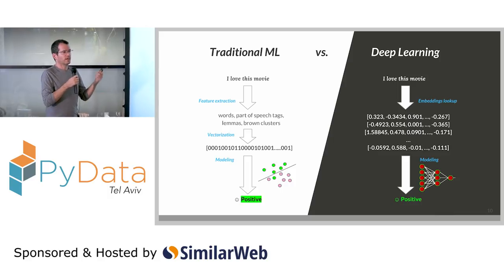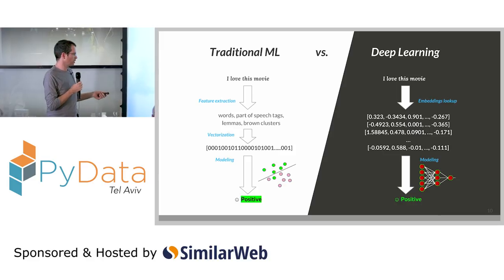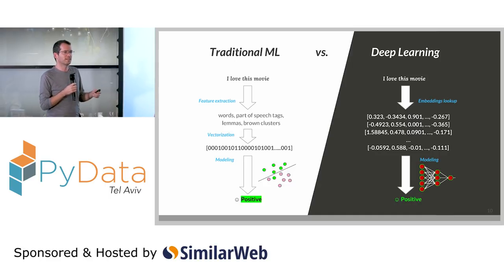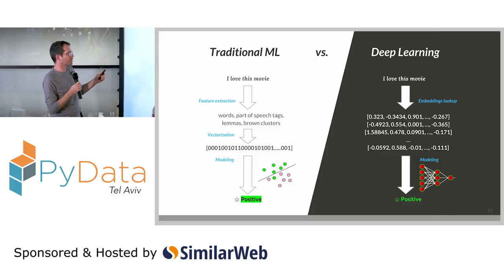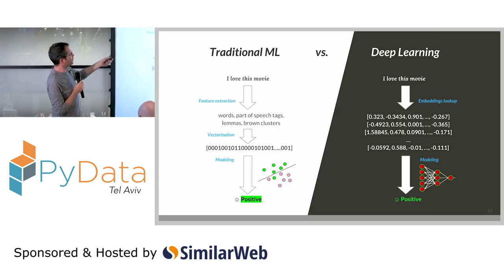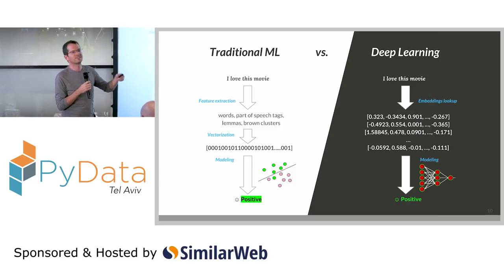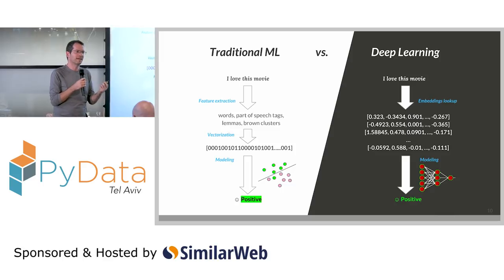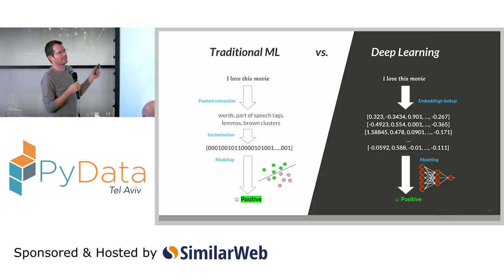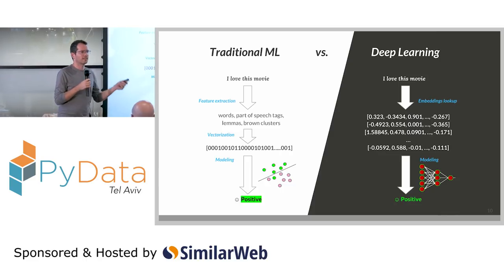Let's briefly discuss the difference between traditional machine learning — what we've been doing at Basis for many years — and deep learning, which we started doing recently. This is specifically for NLP. The example shown is sentiment analysis rather than NER, but it doesn't matter — the input is text and the output is a label or collection of labels.